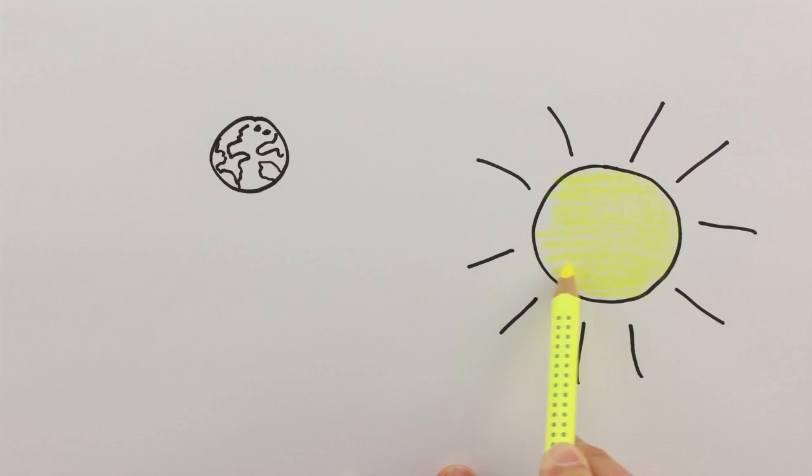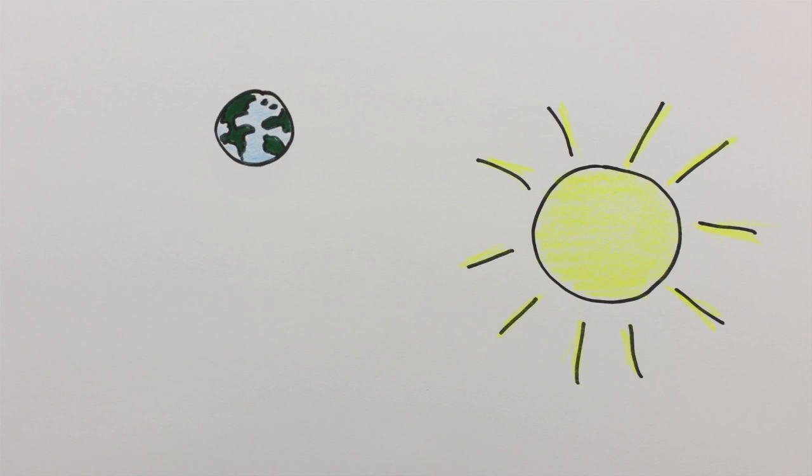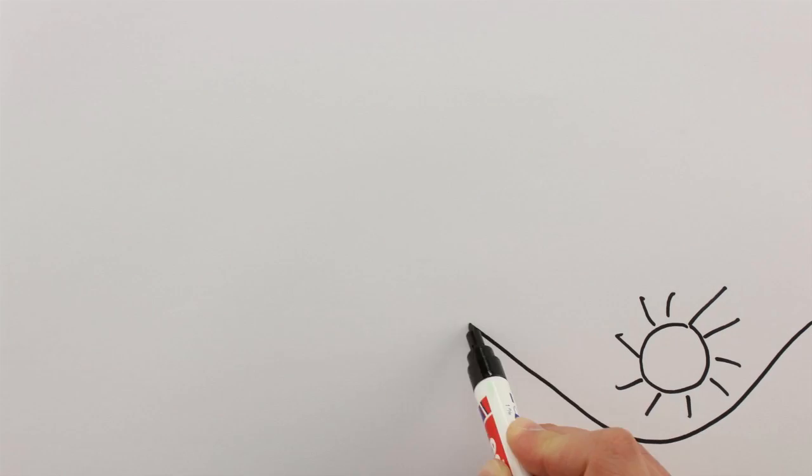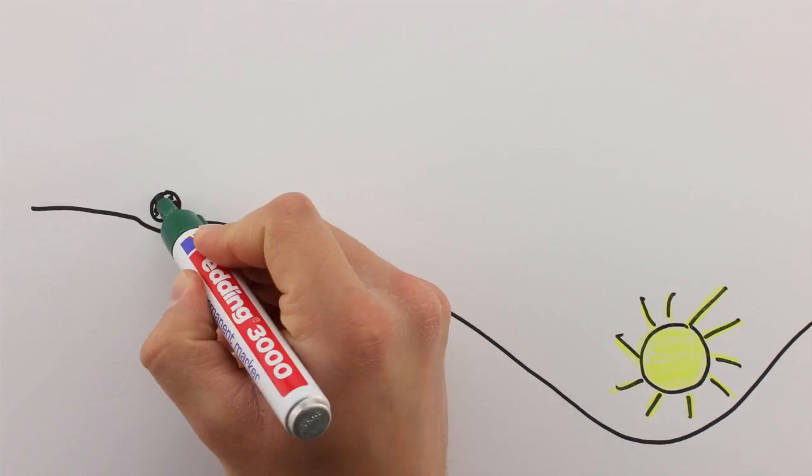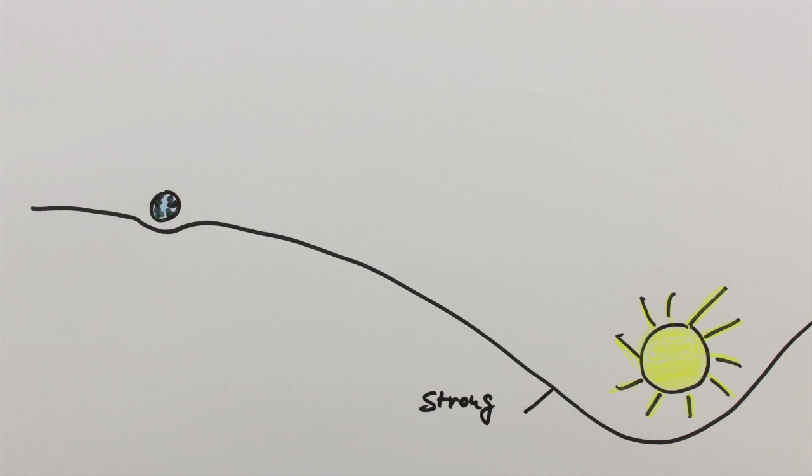It's the gravity of the Sun that holds our planet in its orbit, but we can barely feel this effect at all. This is because a gravitational force decreases with the square of the distance, so it becomes weak really quickly the further away you go.